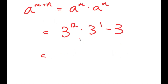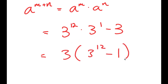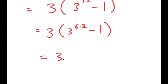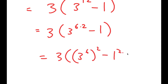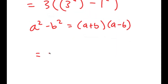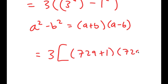From here I can factor out 3, giving 3 times (3^12 minus 1). Now I'll rewrite 3^12 as (3^6)^2, so I have 3 times ((3^6)^2 minus 1²). I can now use the difference of squares property a² minus b² = (a+b)(a-b), which gives 3 times (729 + 1) times (729 minus 1).